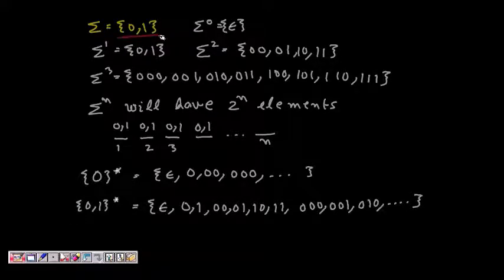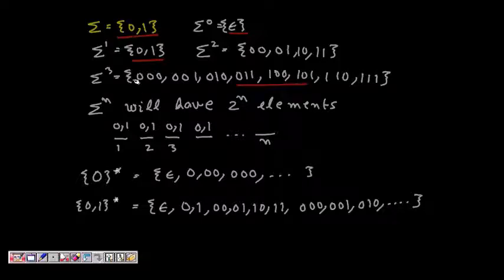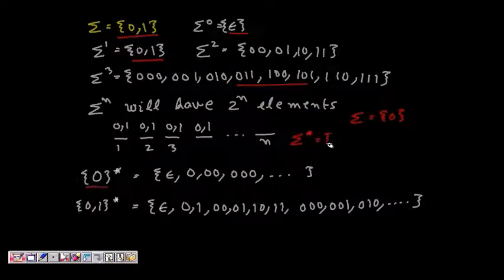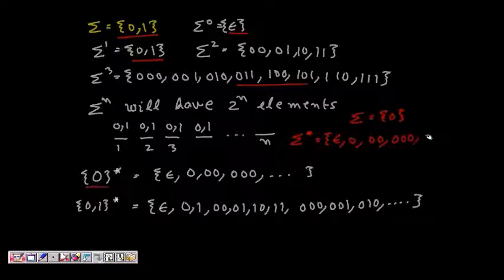For example, if sigma is {0, 1}: sigma^0 is {epsilon}, sigma^1 is {0, 1}. And if our alphabet is just {0}, then sigma star is: epsilon, then 0 (sigma^1), then 00 (sigma^2), then 000 (sigma^3), then 0000 (sigma^4), and so on — this is an infinite set.